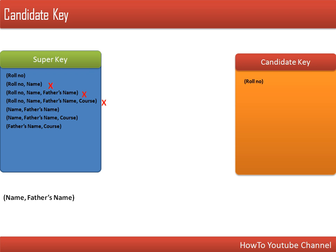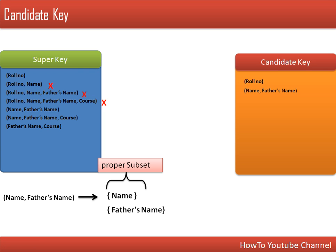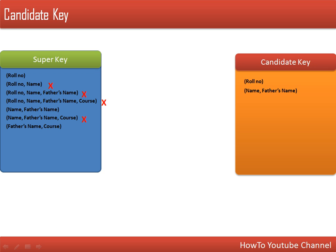Let's have a look at name and father's name. Dividing name and father's name gives us two proper subsets: name alone and father's name alone. None of them is a super key — name alone is not a super key, and father's name alone is not a super key. So this combination will be considered as a candidate key. Note that the combination of name, father's name, and code cannot be a candidate key, because dividing it further gives name and father's name as a subset, which is already a super key.